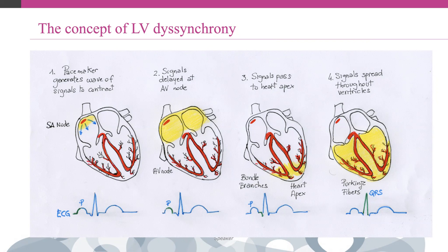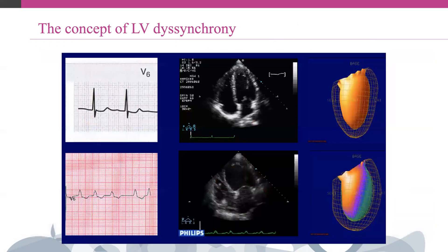Intraventricular dyssynchrony results from the inappropriately early activation of the right ventricle relative to the left ventricle, causing septal displacement and motion, enhanced abnormal septal perfusion, and decreased cardiac contractility. Intraventricular dyssynchrony is the consequence of inhomogeneous contraction of the different LV segments, some activating early while others activate late during the cardiac cycle. Segments contracting early do not contribute to ejection, while contraction of delayed segments occurs at higher stress, ultimately reducing myocardial energy efficiency.